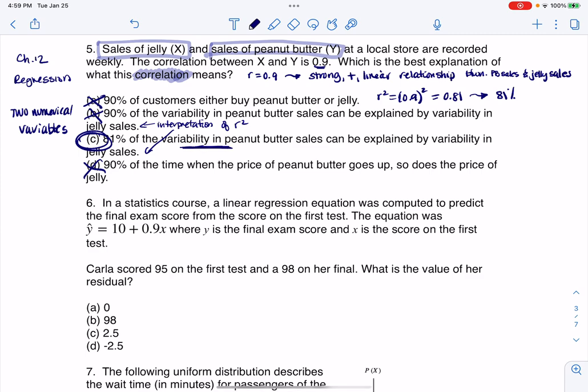We're saying hey, we know sometimes there's variation in how much peanut butter sells, and most of the time that can be explained by how much jelly is selling. And then about 19% of that, we're not sure where it's coming from. All right, so there's number four.